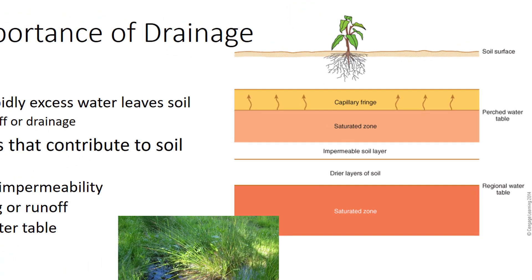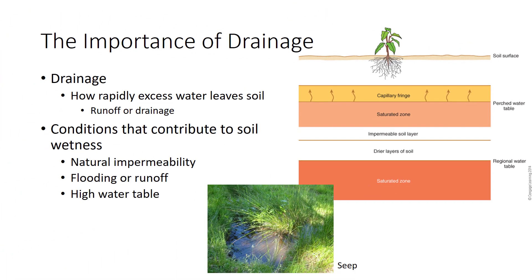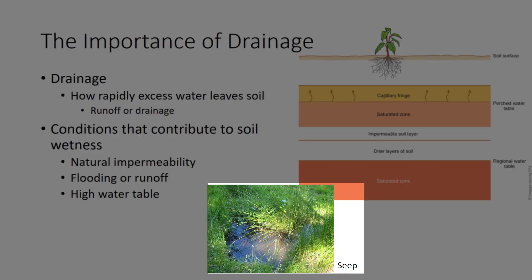Most drainage problems occur in depressions or large level areas that water cannot quickly exit by runoff. Parts of slopes may be wet where a ground layer intersects the land surface. Water leaks out into the soil at these locations, called seeps.